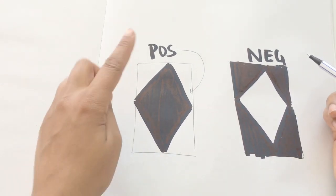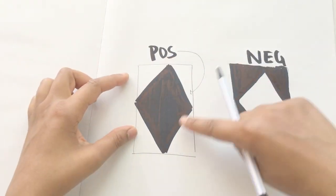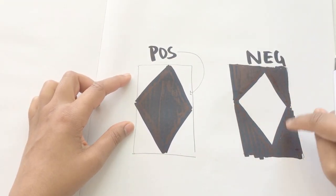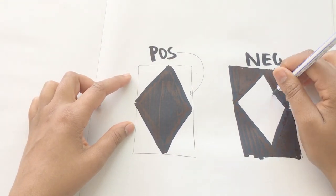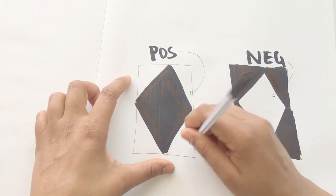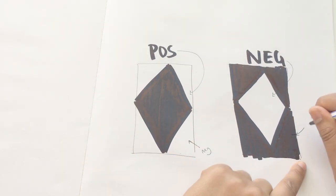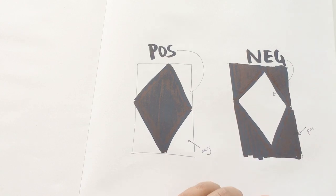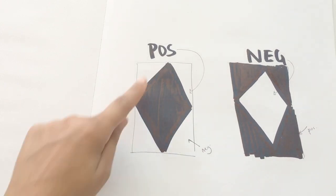Here on the left, the black diamond is the positive space and the small white triangles are the negative space. However, on the right, the white diamond is the negative space while the four black triangles are the positive space.